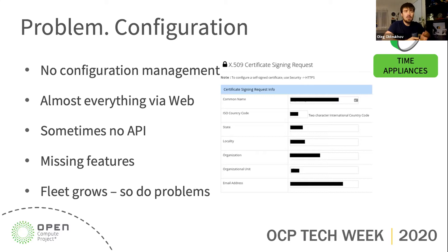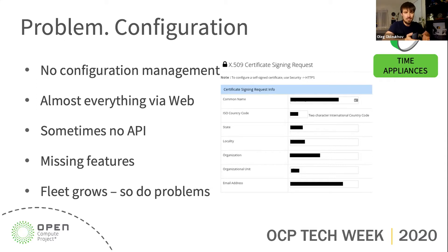Such devices usually don't have a simple API to get monitoring data from them — how good or bad they are. Some support some protocols, some don't. And because those devices are often telecom-oriented, there is a lack of data center-oriented features. A good example is IPv6. You won't believe that in 2020 there are vendors who still don't want to support IPv6 — not saying they cannot, but just saying why would they? In some modern Facebook data centers, we don't have IPv4 at all. And because our fleet constantly grows, those problems are only amplifying.